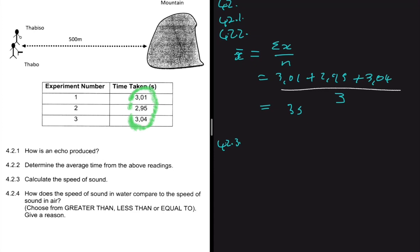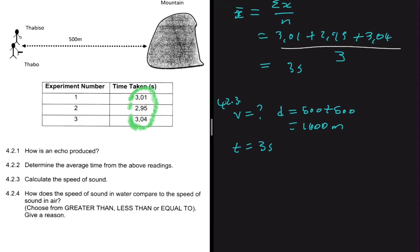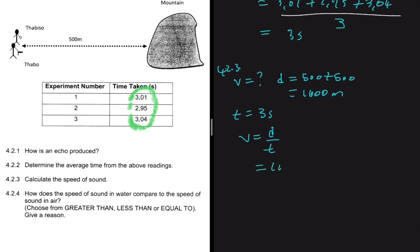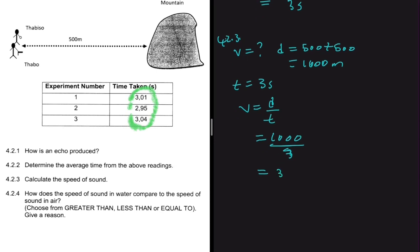4.2.3 asks us to calculate the speed of sound. The sound travels 500 meters to the mountain and 500 meters back, giving a total distance of 1000 meters. The time is 3 seconds. Velocity equals distance divided by time, so 1000 divided by 3 gives approximately 333.3 meters per second.